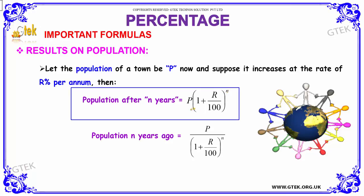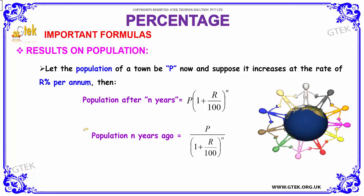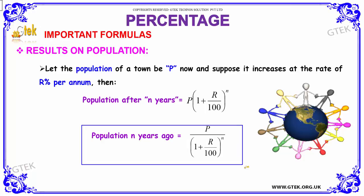Where n is the number of years, P is the population of the town, and r is the rate at which it increases. To find the population n years ago, we have the formula: P by (1 plus r by hundred) the whole power n, where P is the population and r is the rate of increase per annum.